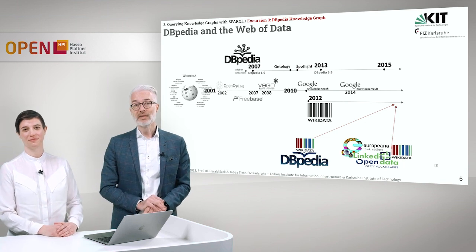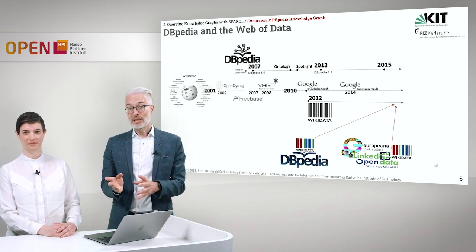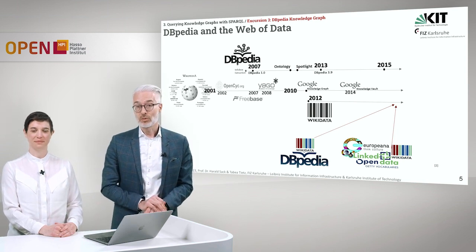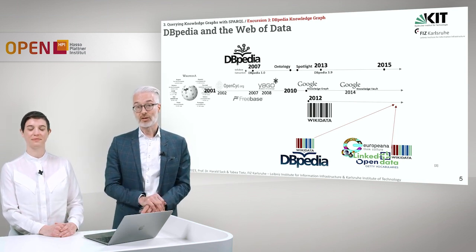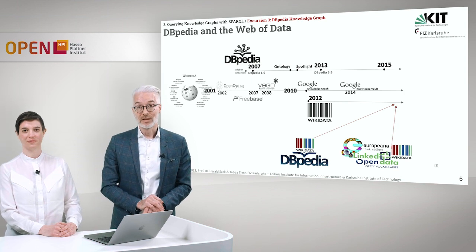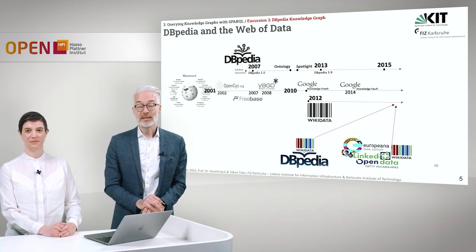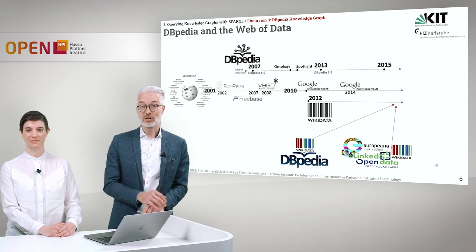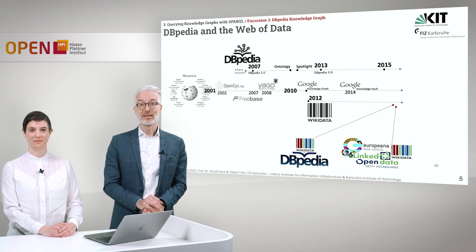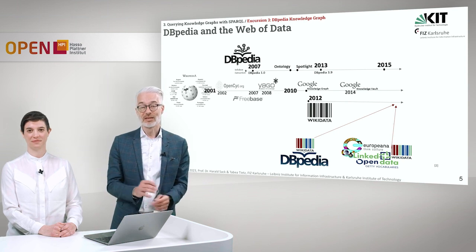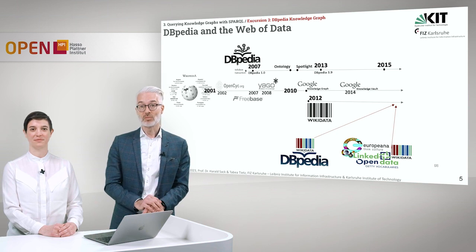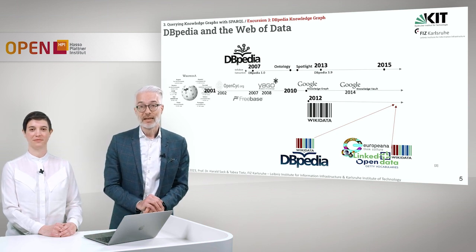Looking at the timeline, DBpedia of course somehow relates to Wikipedia. Wikipedia started in 2001, more than 20 years ago. Already in 2007, there was the very first idea and implementation of a semantic version of Wikipedia, which is DBpedia. Later on the timeline, there was an ontology developed, and also an entity linking tool for DBpedia which was called Wikipedia Spotlight.